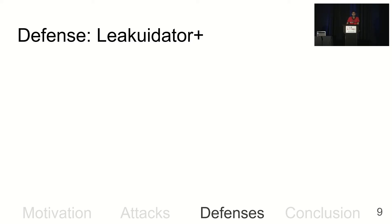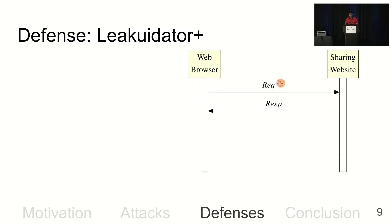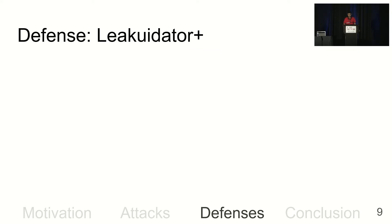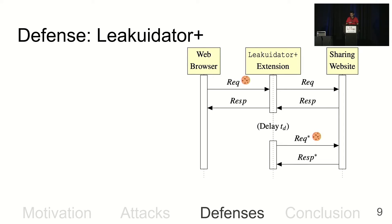We've seen the attacks — what can we do about it? We also propose a defense for these attacks. This figure shows the normal behavior in the browser without our defense: the cross-site request is made with cookies, and the response is rendered in the browser. Our defense, Liquidator Plus, is a browser extension which sits between the browser and any website visited. It is already publicly available and can be installed in Chrome and Firefox.